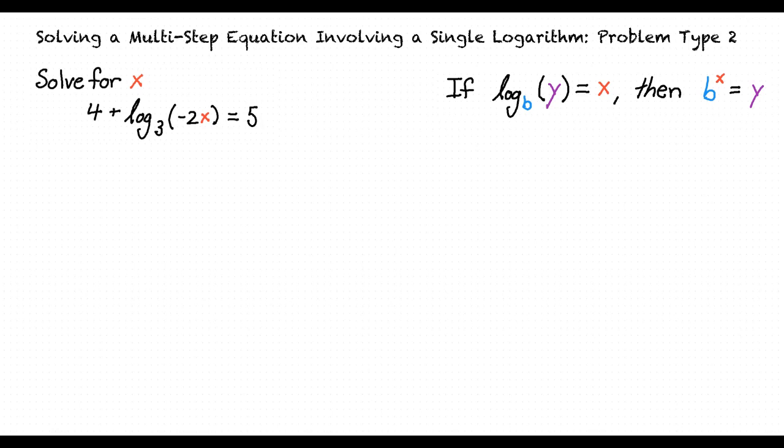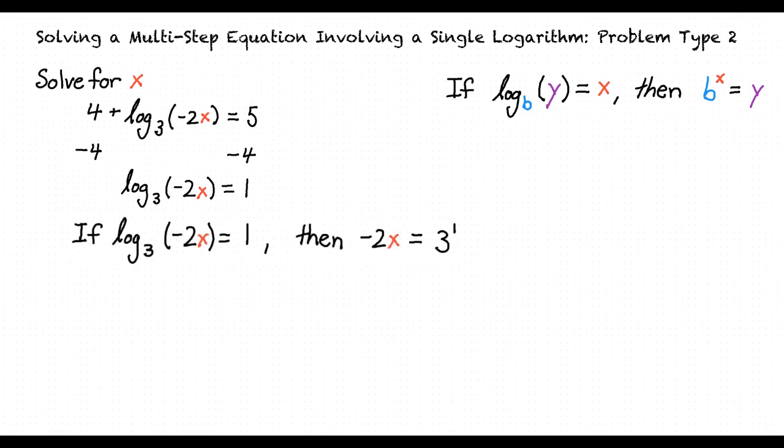How do we begin to solve this problem? The first step is to isolate our logarithm to one side of the equation. We can do so by subtracting 4 from both sides of the equation. Our next step is to take the logarithmic equation and express it in exponential form. Doing so, our equation will now look like this.